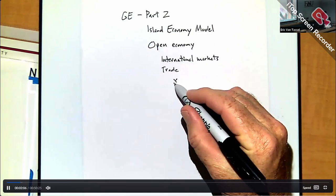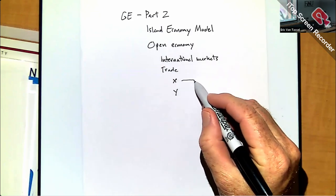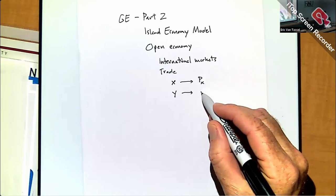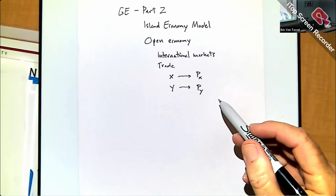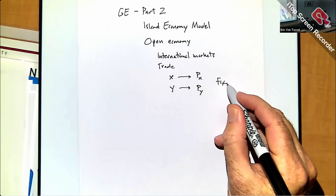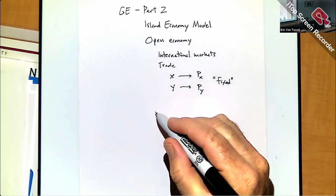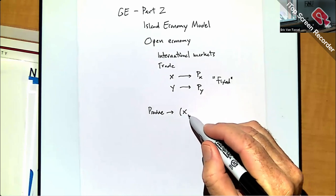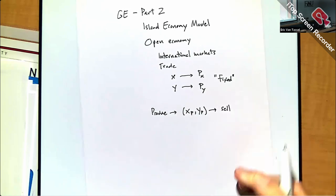The idea is that if we have two types of consumption goods, X and Y, in the international market these two goods trade at some international prices PX and PY. These are fixed from the point of view of the individual country. So the country can produce products X and Y.